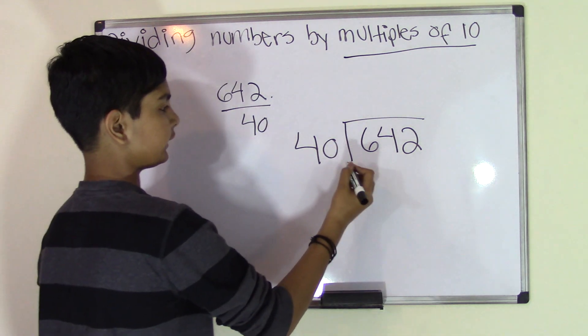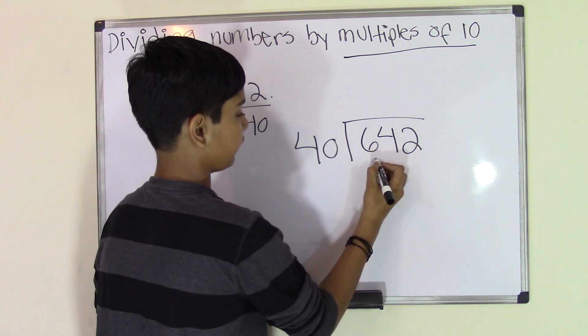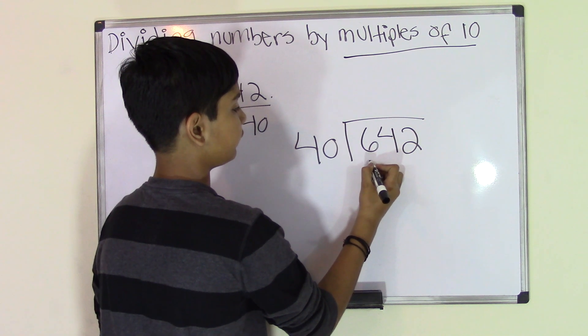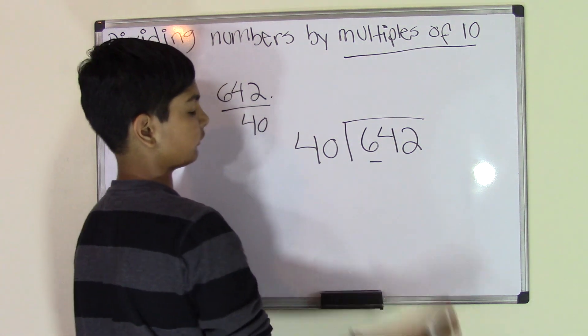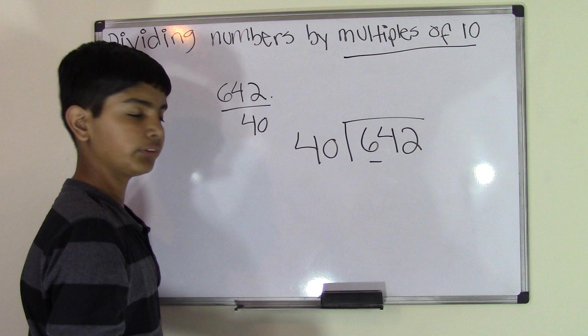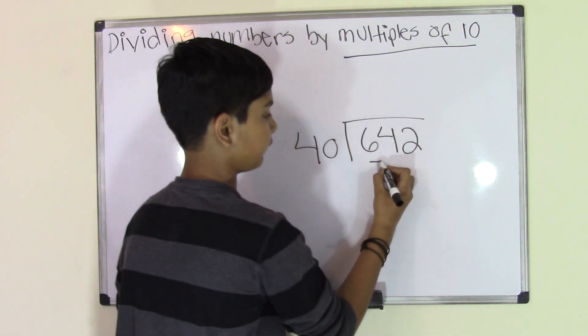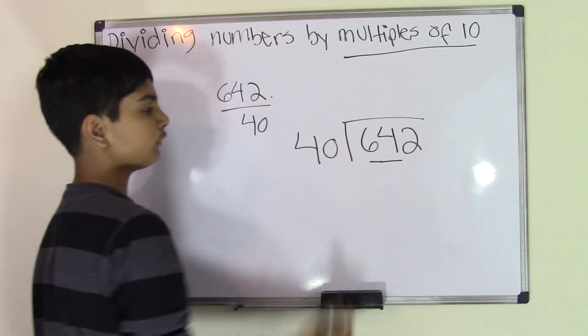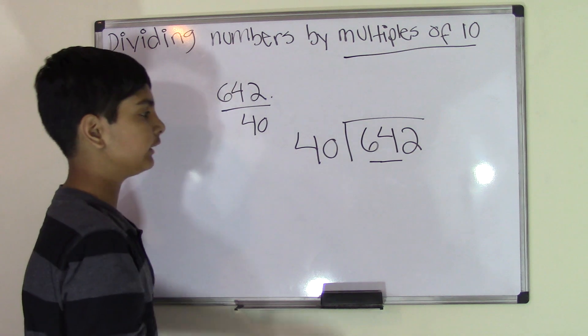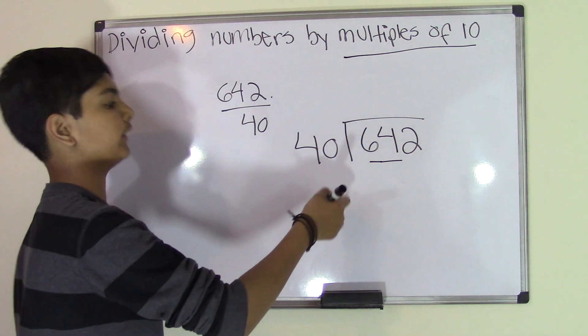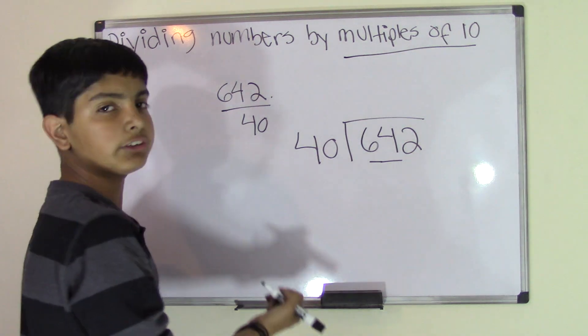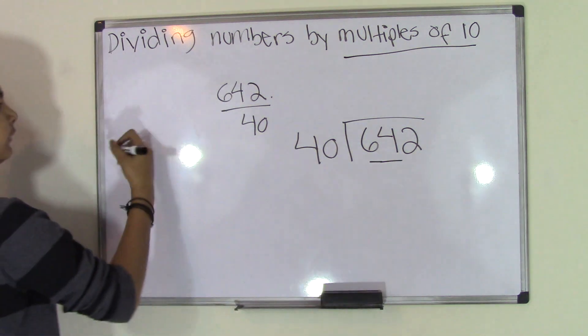First, let's check if 40 can divide into 6. No, because obviously 6 is smaller than 40. Can 64 be divided by 40? Yes, maybe, because 64 is obviously greater than 40.